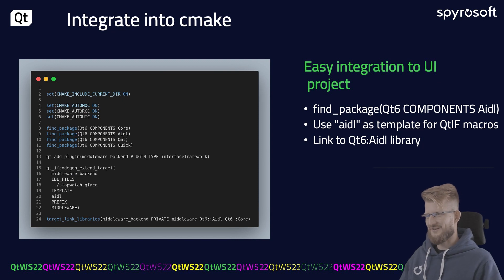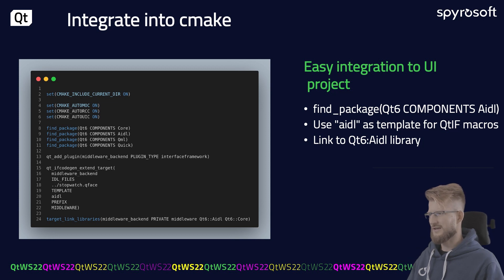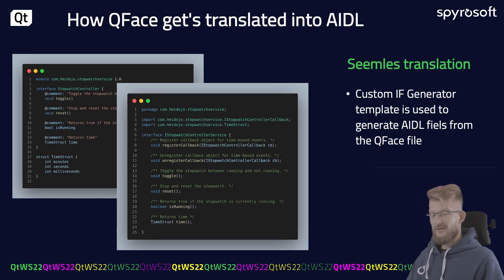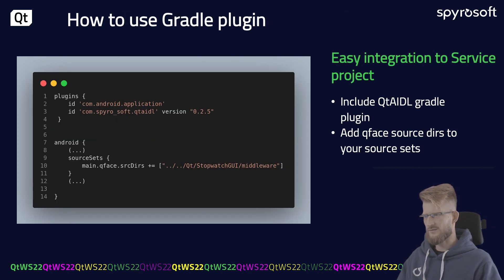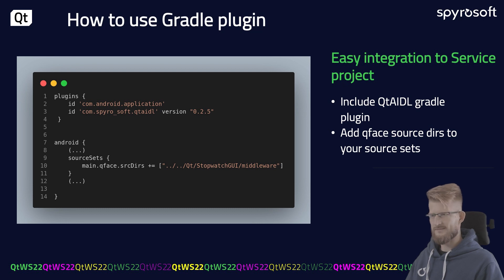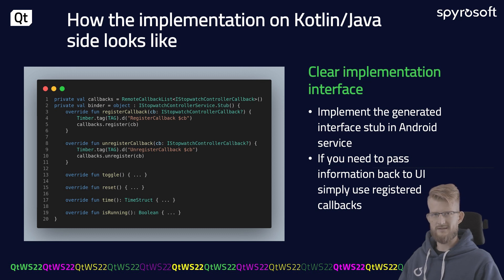CMake integration is easy — we just need to import the AIDL Qt module and invoke the code generation. Provided templates are used to generate the AIDL files from Qface. Also, in Gradle, we just need to import the plugin and set the Qface location. After that, all that is left for us to do is to implement the generated interface in the service.